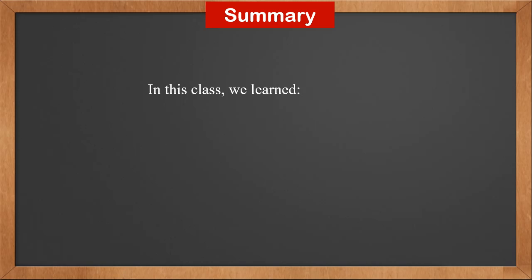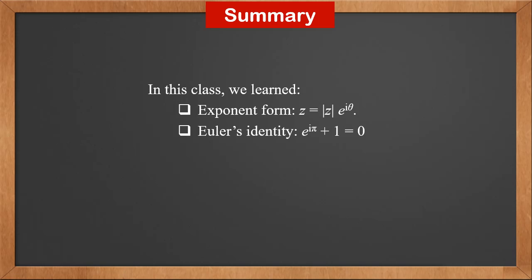In this class, we learned: the exponential form of a complex number z is z's modulus times e to i theta, where theta is the argument of z. Euler's identity is e to i pi plus 1 equals 0.